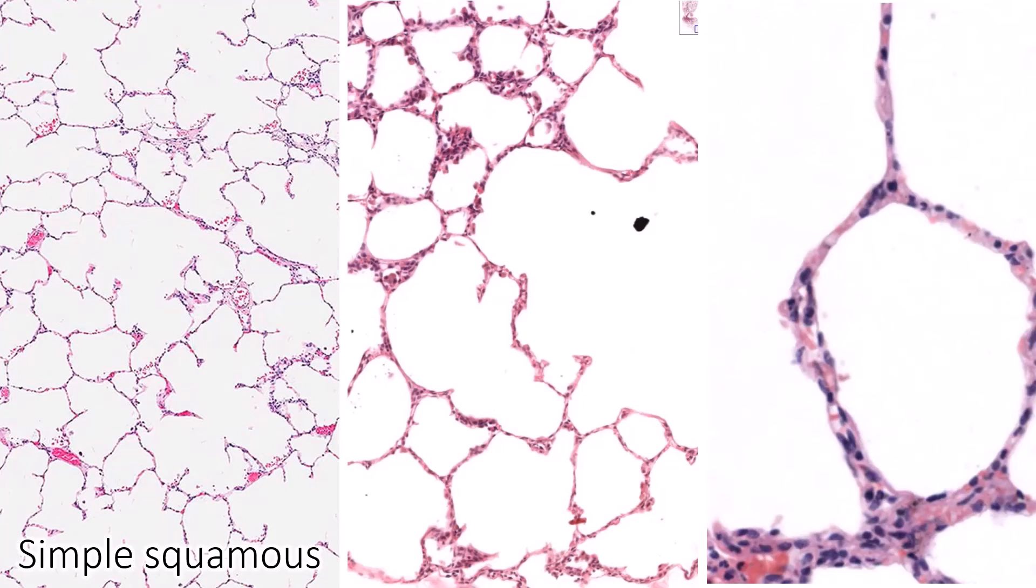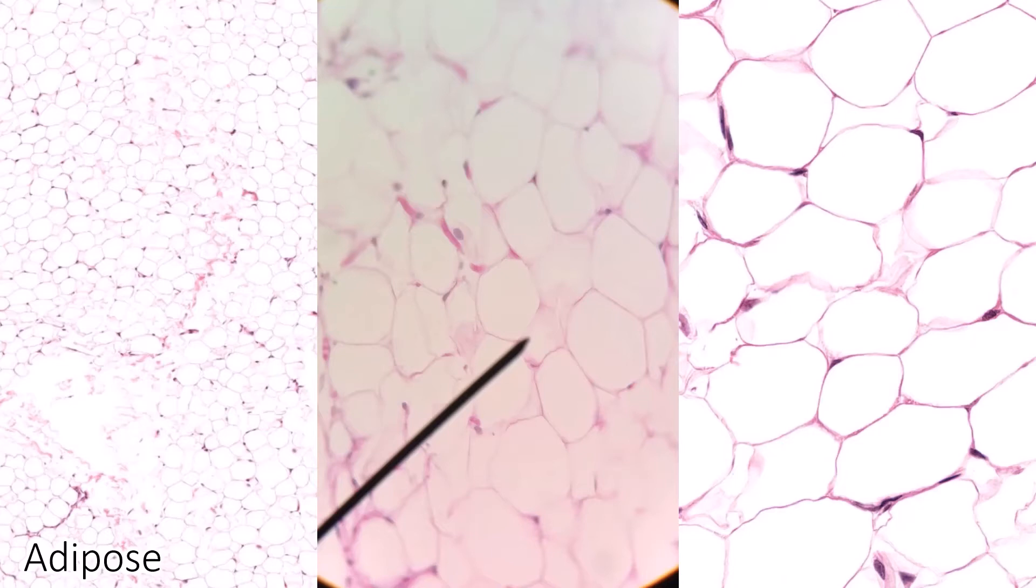These three examples here are typically when people are going to confuse simple squamous for adipose. So this is simple squamous as seen in the lung, and people see empty space and they confuse it with adipose.